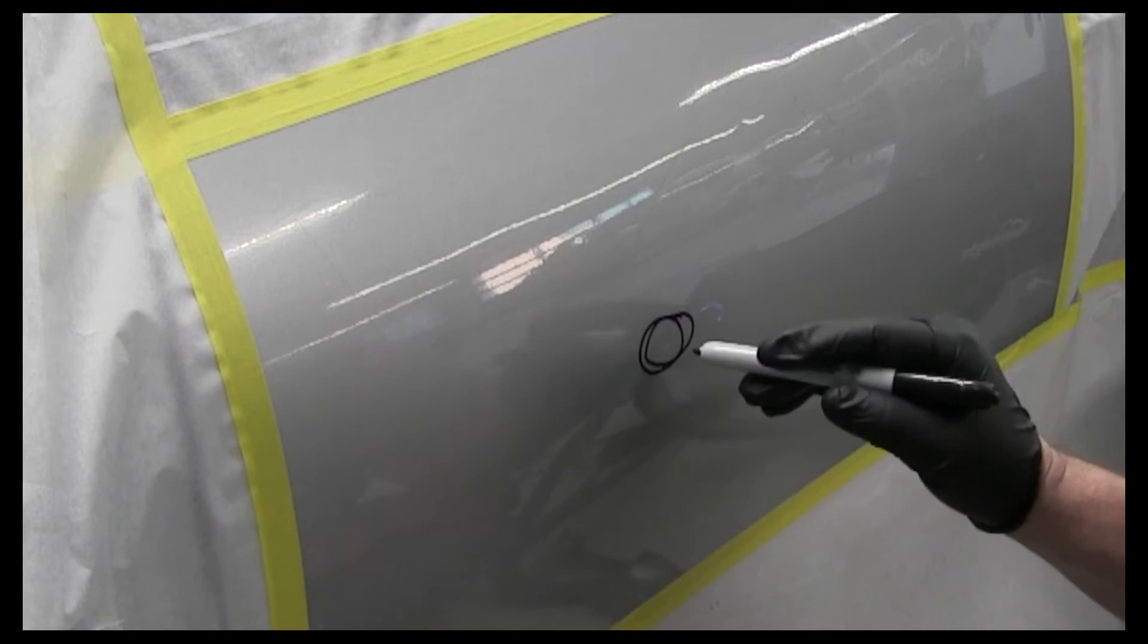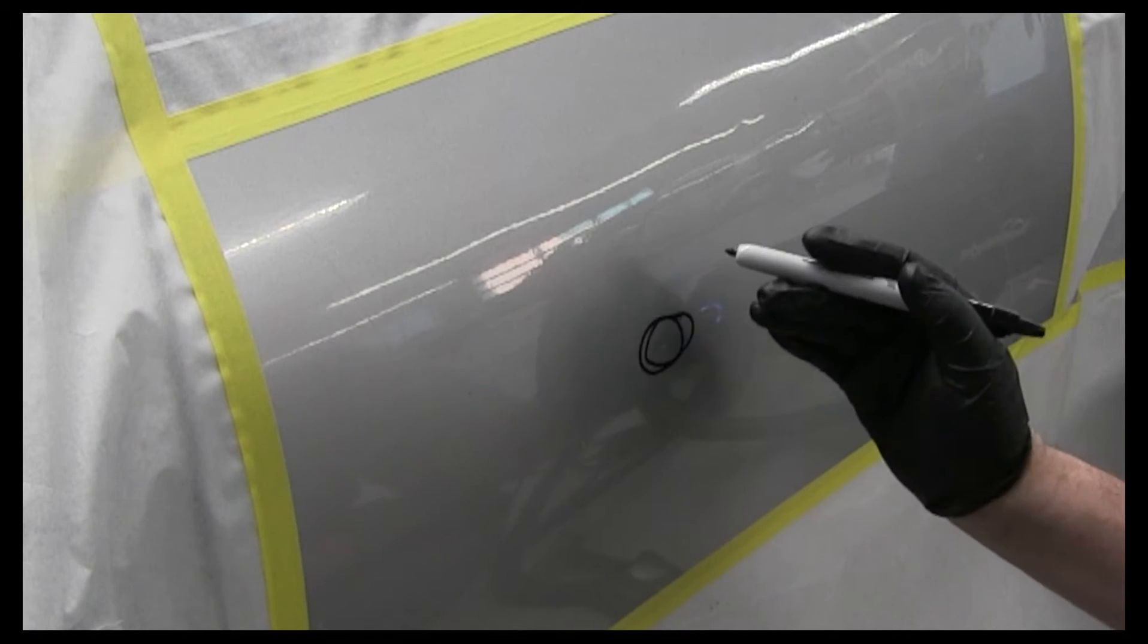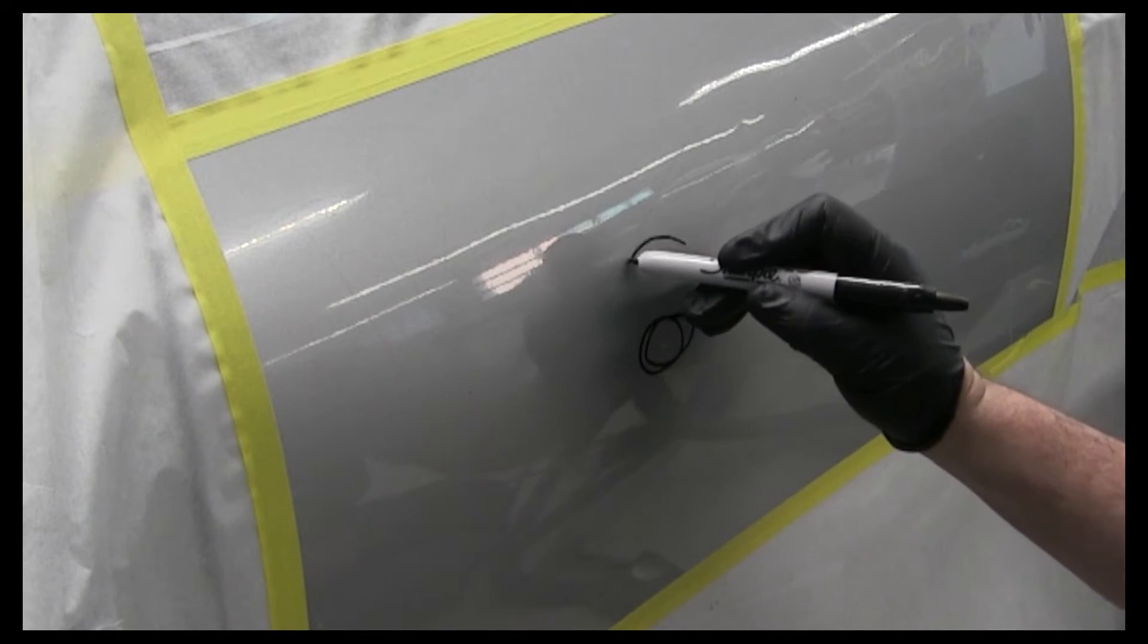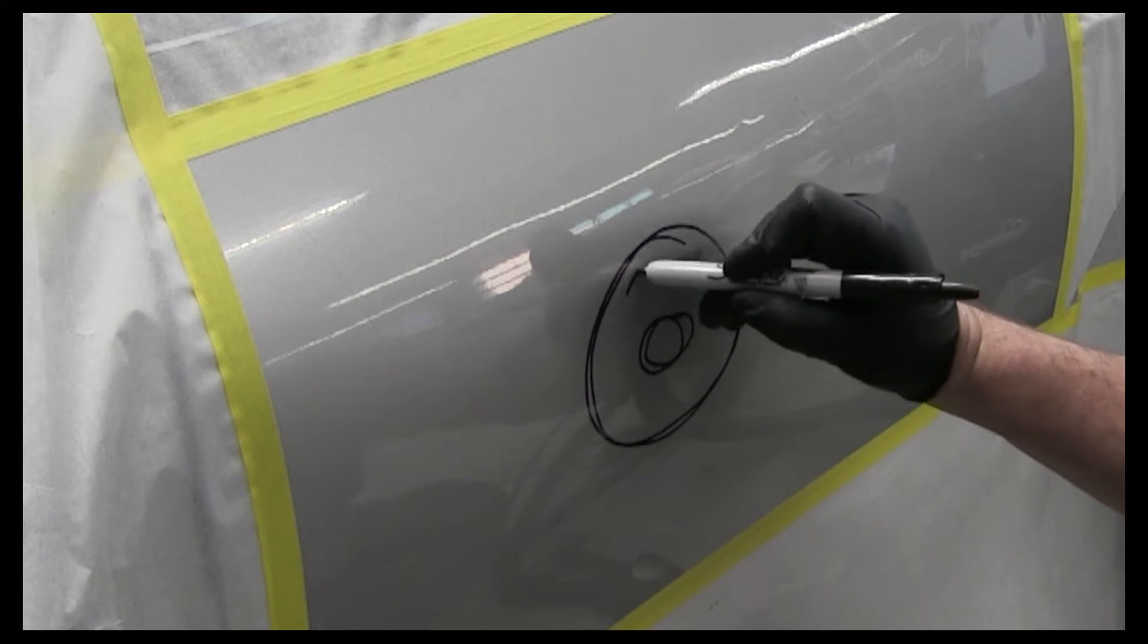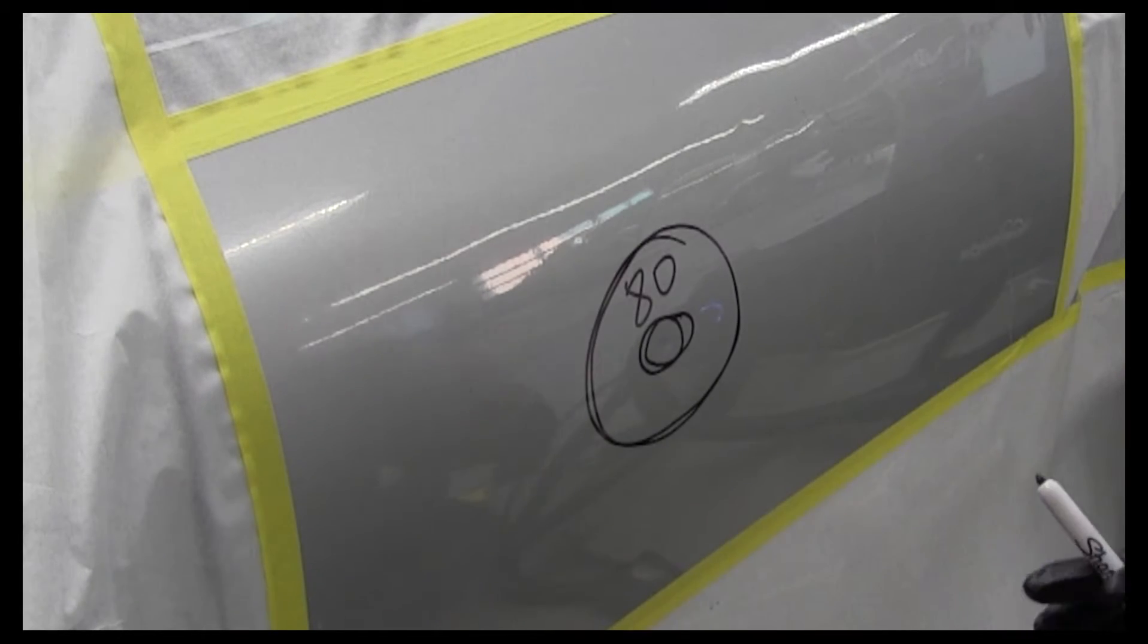In order to get the body filler, we don't want to apply that on top of the paint, we're going to go two or three inches past that, so right in here is going to be 80 grit.